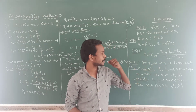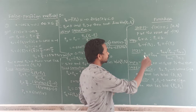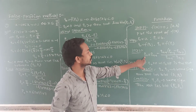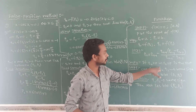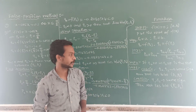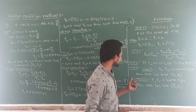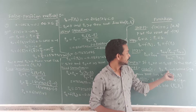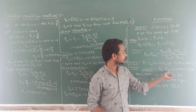This method is the same as the secant method. So if Q2 is equal to 0, then p is the root of the given equation. If Q2 is equal to 0, then p2 is the root of the given equation.